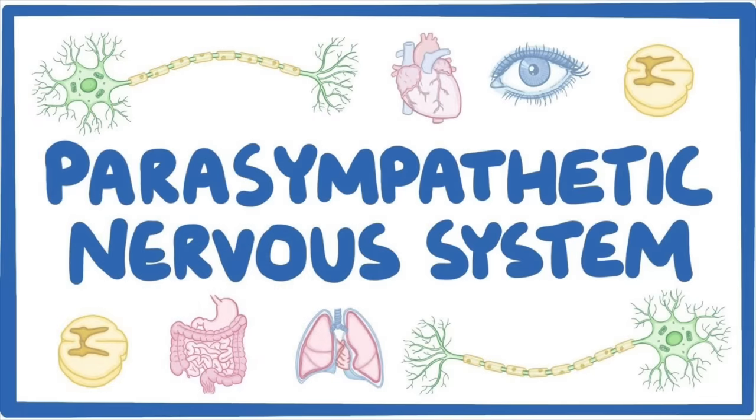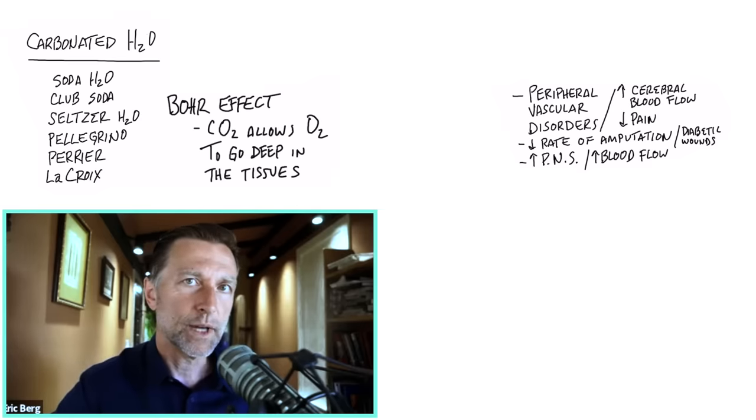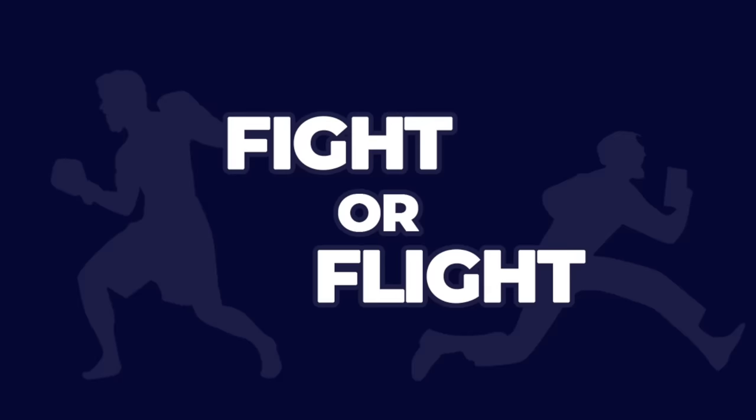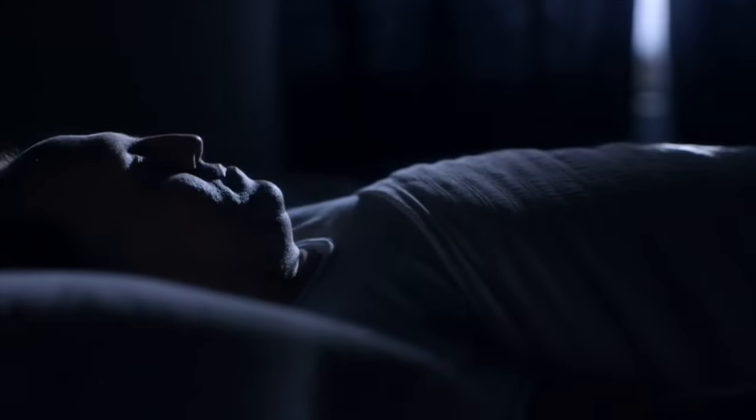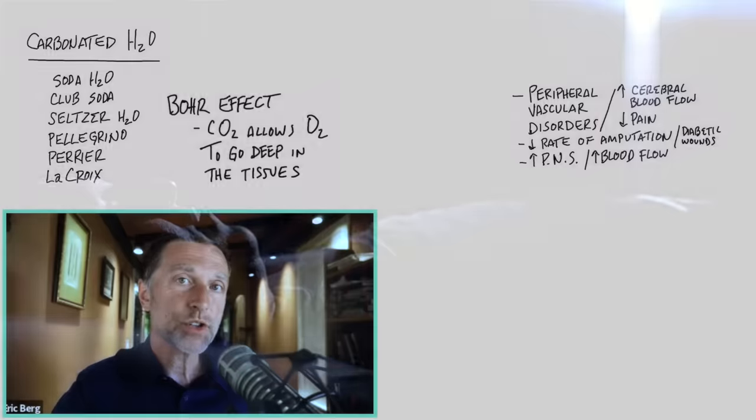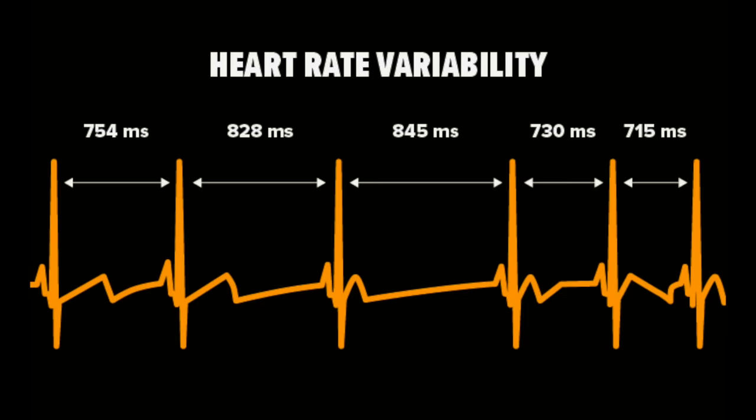One study I found showed there was a significant increase in the parasympathetic nervous system activation by increasing CO2. That's the system that counters the fight or flight mode. It's the system that helps your healing and your digestion and your ability to sleep. The device they use to measure the parasympathetic is what I used in my practice, which is technology called heart rate variability.